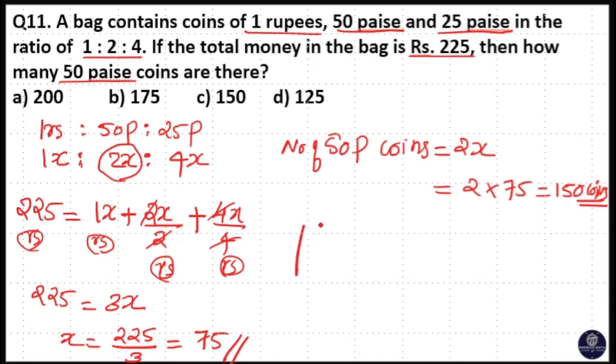So we have 1 rupee, 50 paise and 25 paise coins. If x is equal to 75, that means 1 rupee coins: 75, 50 paise coins: 150, and 300 twenty-five paise coins.